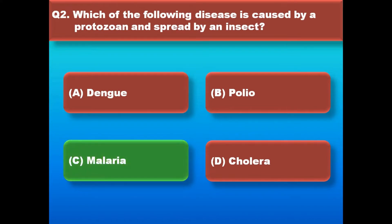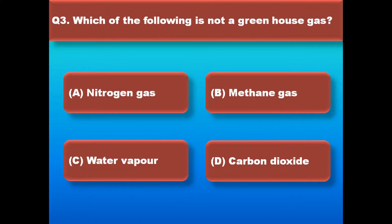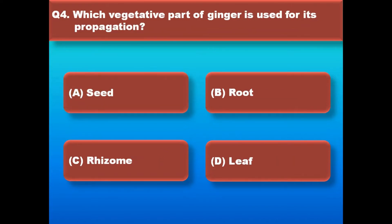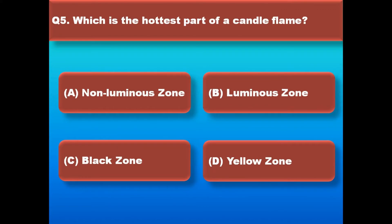Right answer is malaria. Which of the following is not a greenhouse gas? Right answer is nitrogen gas. Which vegetative part of ginger is used for its propagation? Right answer is rhizome. Which is the hottest part of a candle flame?